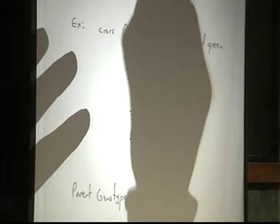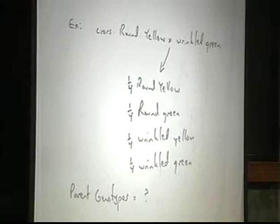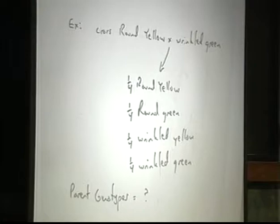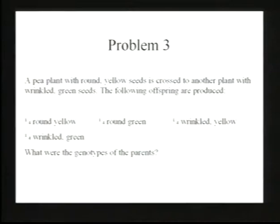Solving dihybrid cross problems is not terribly difficult if you keep in mind Mendel's basic rules. Mendel's rule of independent assortment is particularly critical here, because it says that alleles for different traits do not influence each other. It's as if each one is in a little vacuum all by itself, and you don't have to worry about the other set of alleles when you solve the first set.